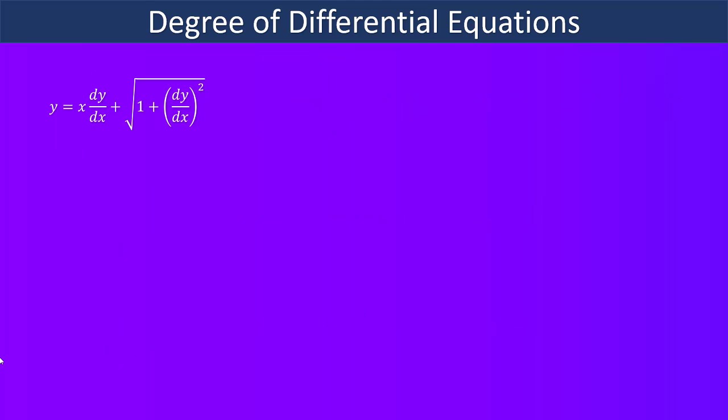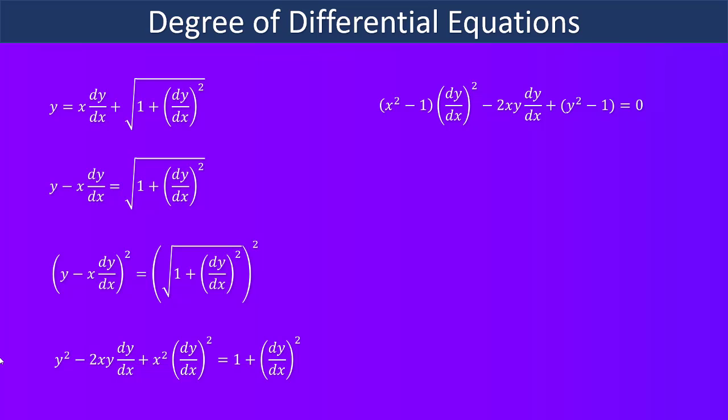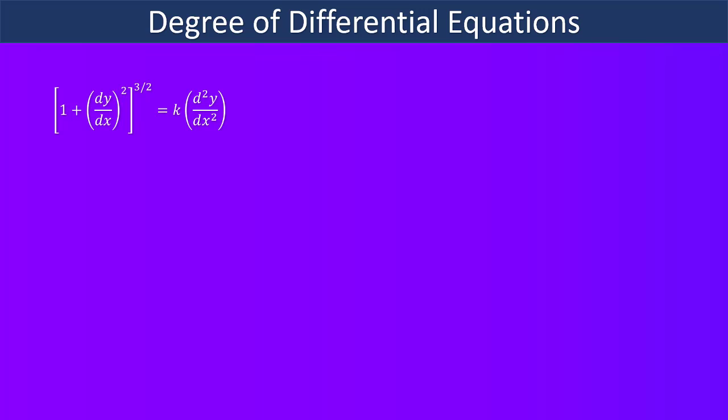Consider the differential equation y = x(dy/dx) + √(1 + (dy/dx)²). When expressed as a polynomial in derivatives it becomes (x² − 1)(dy/dx)² − 2xy(dy/dx) + y² − 1 = 0. In this equation the power of the highest order derivative is 2, so its degree is 2.